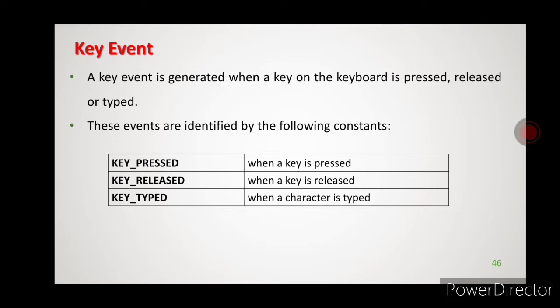These events are identified by the following constants. Key event will generate when we press a key on a keyboard, release a key, or type some characters. Key pressed means on keyboard when we press a key, that is identified by the constant KEY_PRESSED. After typing that key we release it, that is called key released, represented by the KEY_RELEASED constant. Key typed means any characters we are typing on the keyboard — when a character is typed we call it a key typed event.